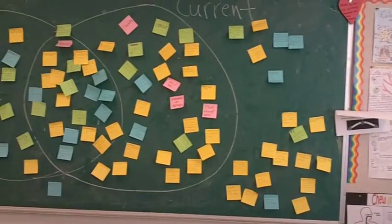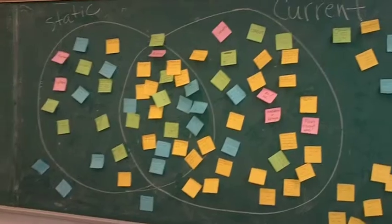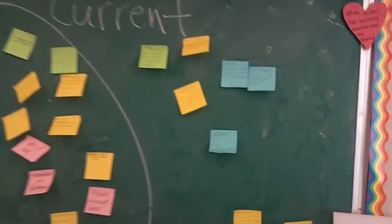And then as a class, we went through all of the ones on the outside and tried to see if they in fact were part of electricity and needed to be in the Venn diagram or if they could stay on the outside.